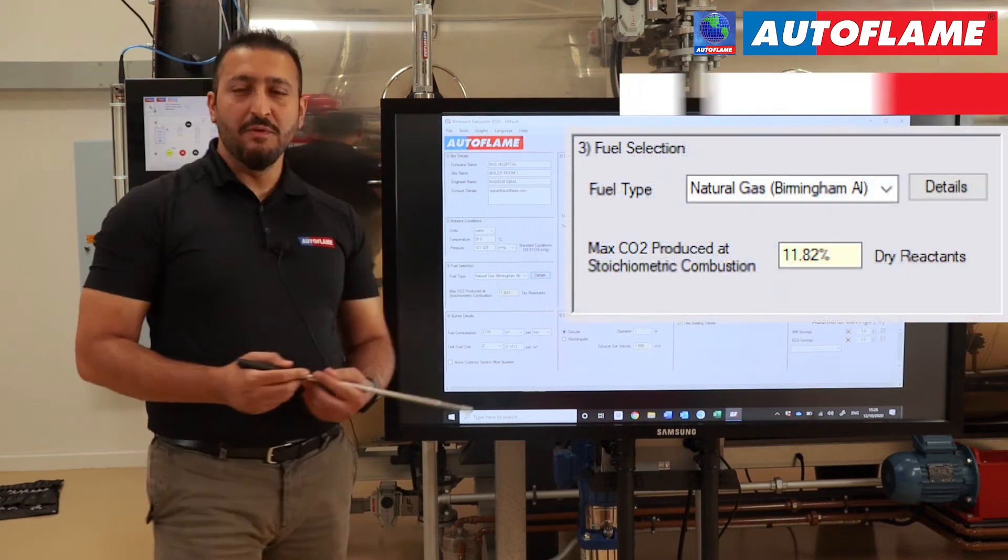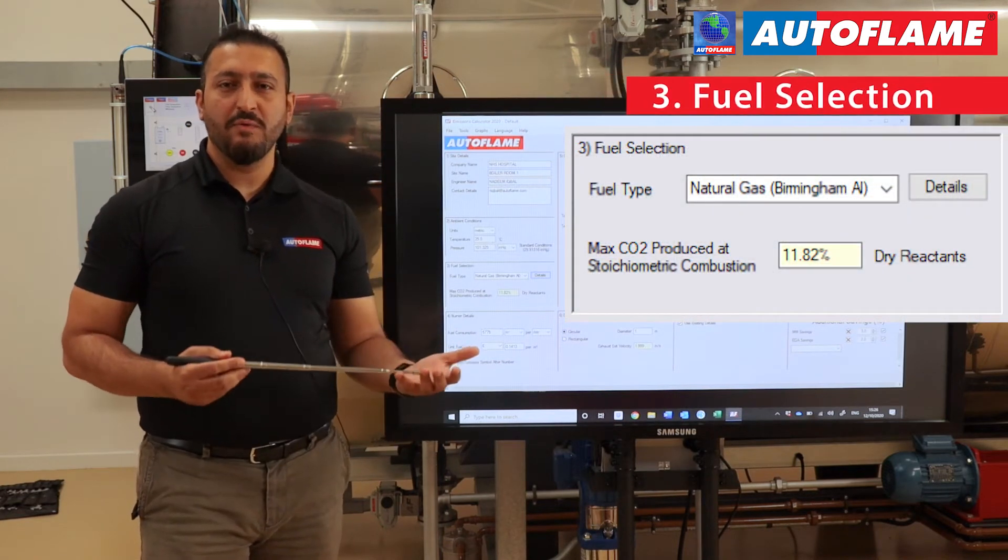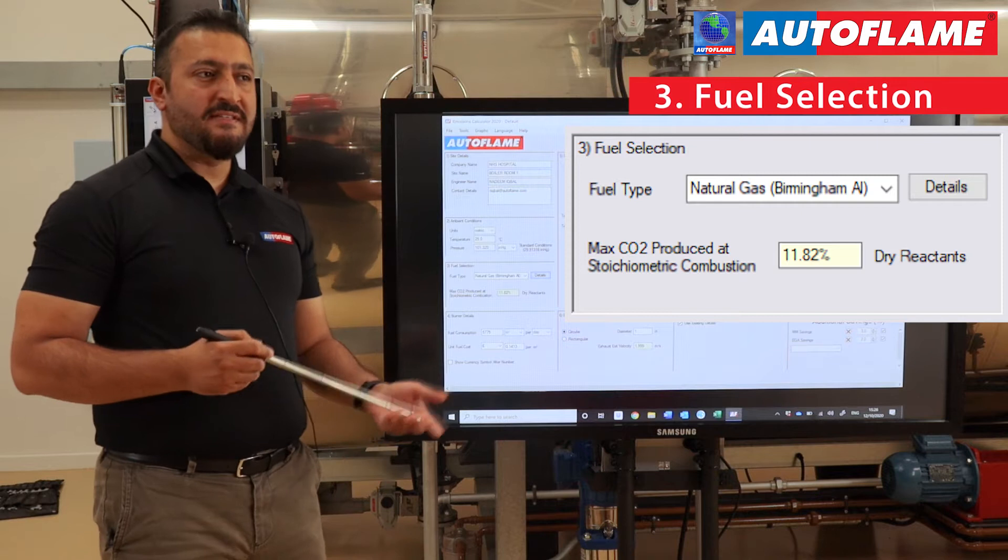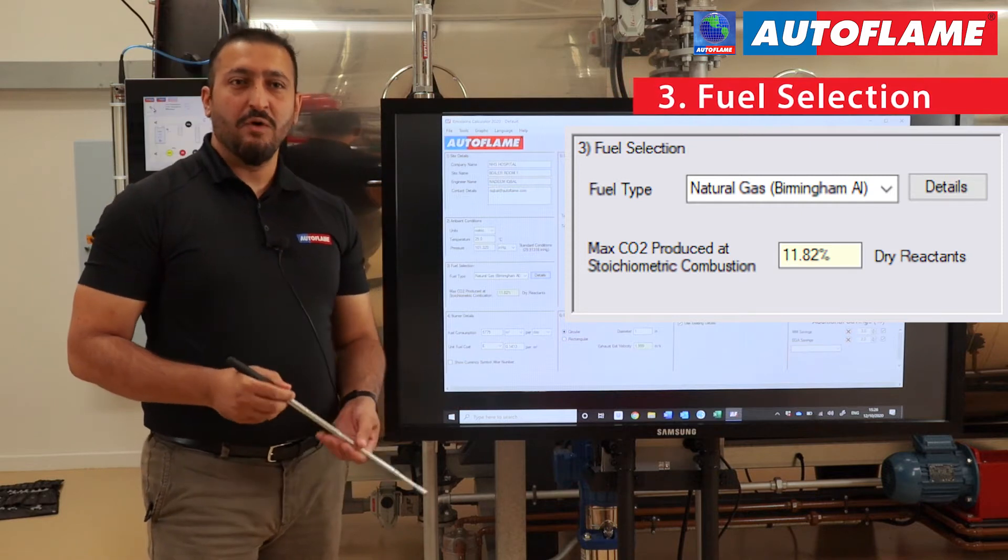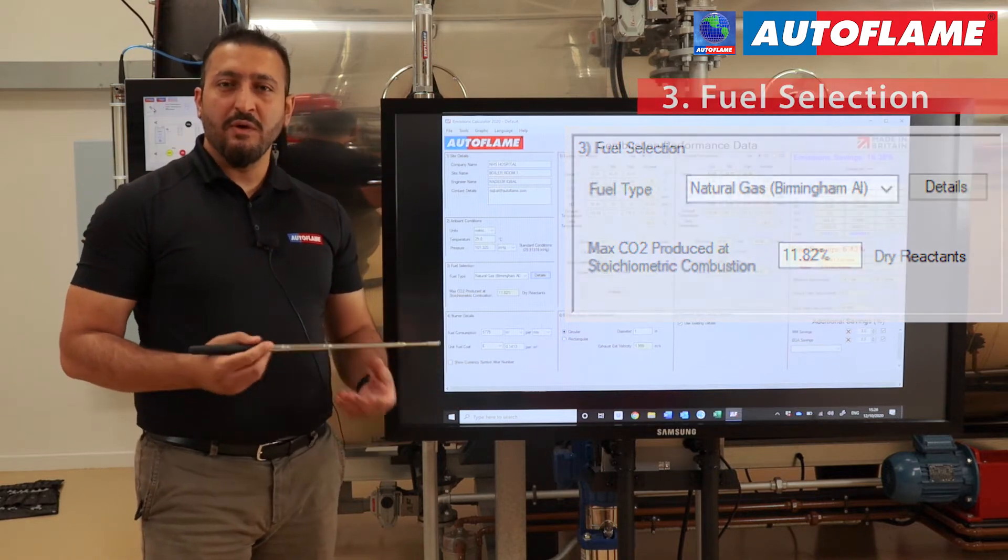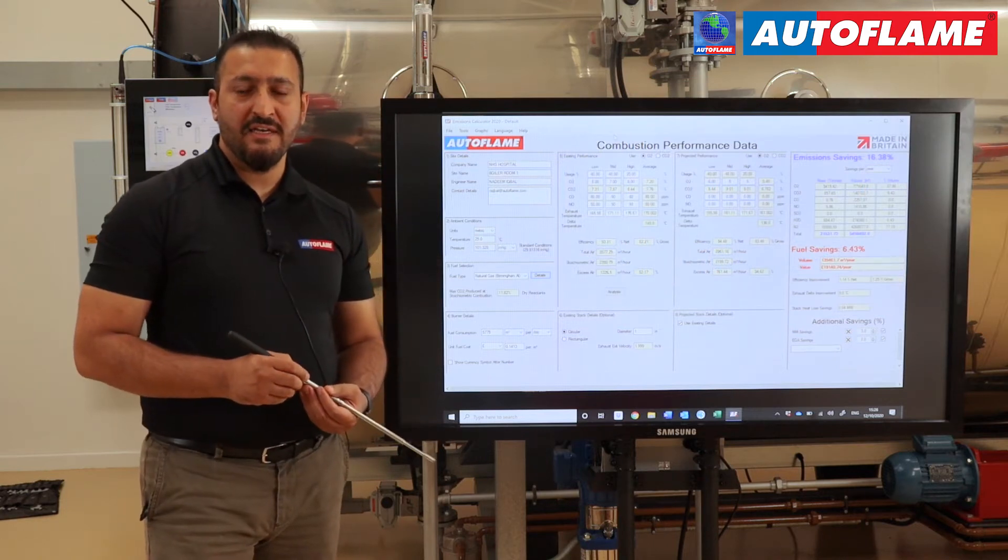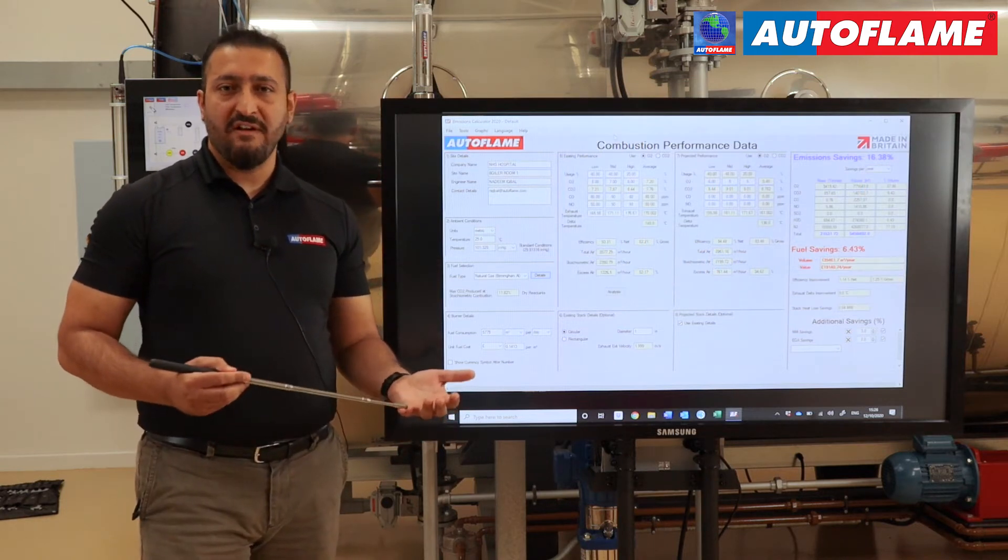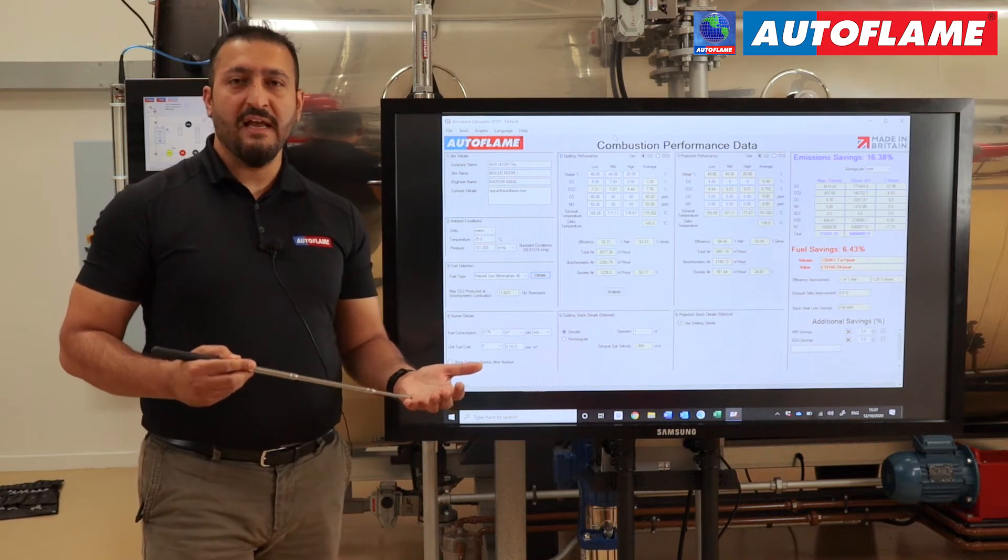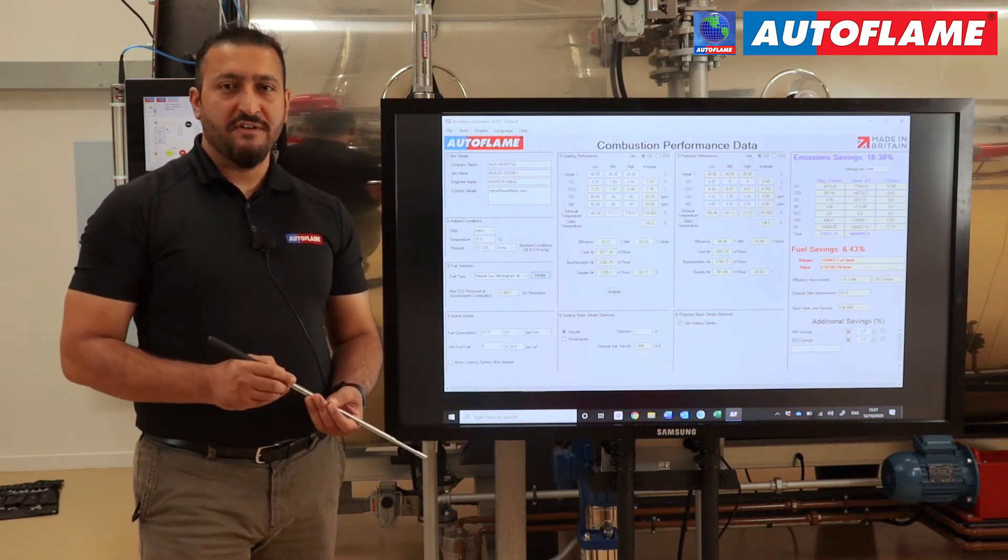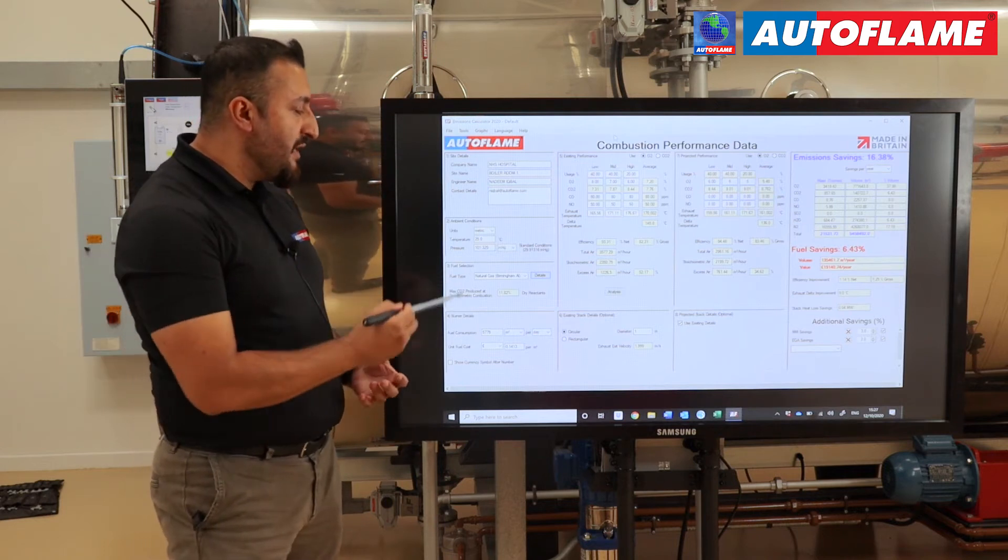In section three, we add the fuel details. Where we're getting the fuel, what type of fuel it is - if it's liquid fuel, natural gas, or if it's a biofuel. We can also add a fuel if it's not already listed in the emissions calculator. We will need the specific gravity of the fuel, the calorific value, and the chemical concentration of the fuel, and we can actually add a new fuel in.